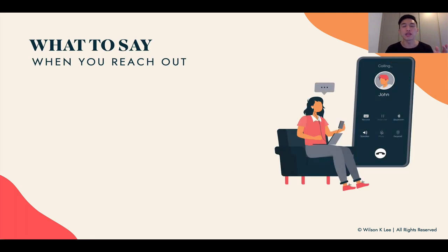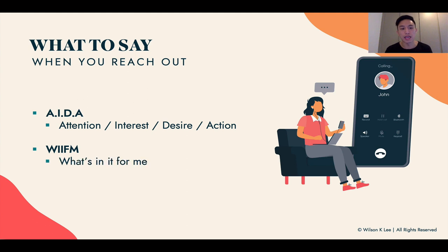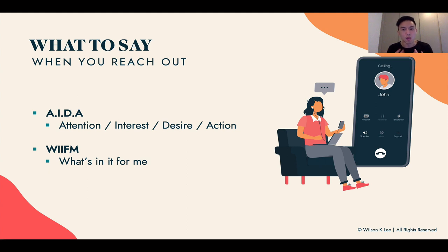Now that you're ready, what do you say when you reach out? We use two different tactics. First is a copywriting tactic called ADA — Attention, Interest, Desire, and Action. That's how you draft your message. The other fundamental you should understand is WIIFM: What's In It For Me. As an influencer reading your email or DM, they're always asking: why am I reading this? What's the collaboration? What's in it for me? Understanding that underlying question will help you craft the best message with the best chances of getting a collaboration.